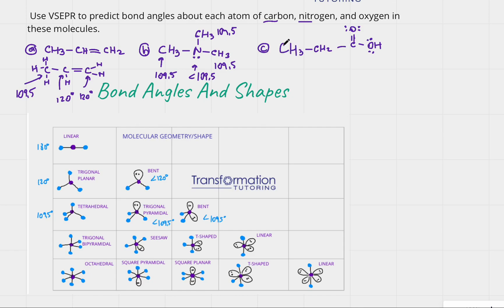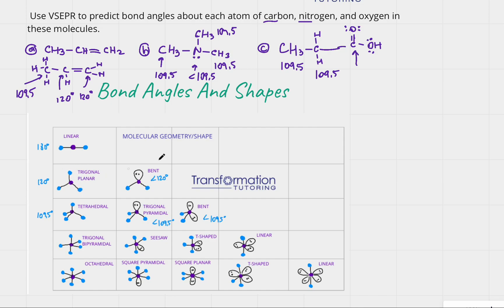In part C, we again have a CH3 group — connected to three hydrogens and a carbon — so the angle is 109.5°. The CH2 carbon is connected to two hydrogens and two other carbons, giving four atoms total, so it's tetrahedral at 109.5°. The next carbon is connected to an oxygen, another oxygen, and a carbon — three atoms only — so the bond angle is 120°.